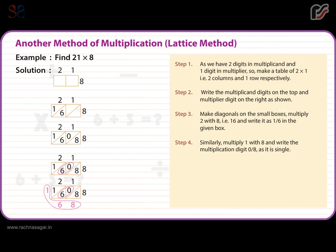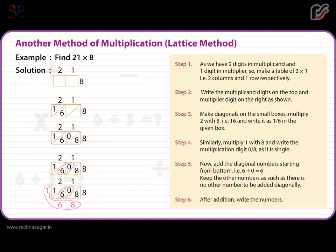Step 4: Similarly, multiply 1 with 8 and write the multiplication digit 0 by 8 as it is single. Step 5: Now add the diagonal numbers starting from bottom, that is 6 plus 0 is equal to 6. Keep the other numbers as such as there is no other number to be added diagonally.